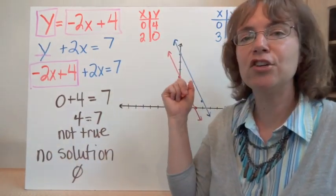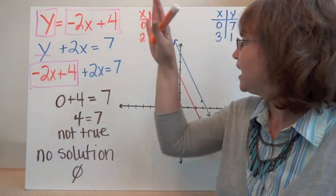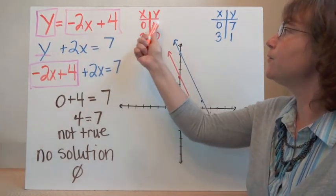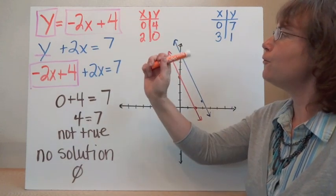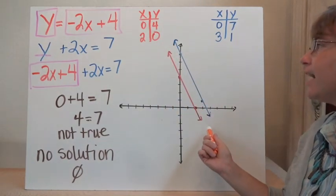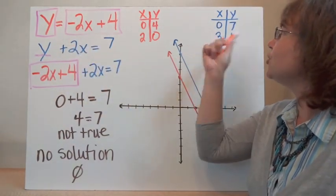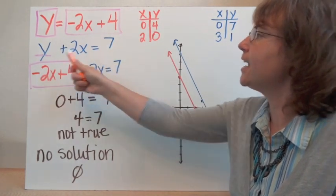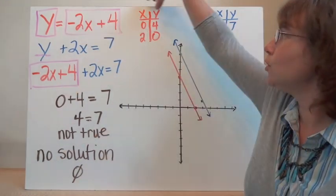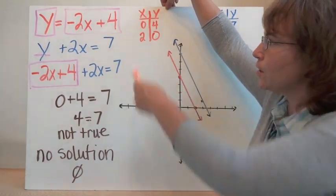When we were graphing, we saw that no solution meant parallel lines. So I'll plot two points from each equation to double check. For the first equation, choosing x equals 0 gives y equals 4, and choosing x equals 2 gives y equals 0. For the second equation, choosing x equals 0 gives y equals 7, and choosing x equals 3 gives y equals 1. When I graph those points and draw the lines, they indeed look parallel — so there's no solution and no coordinate point that works for both equations.